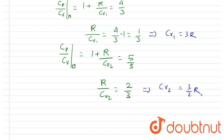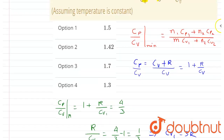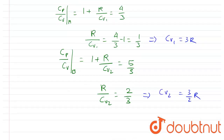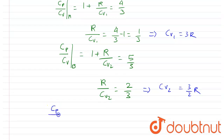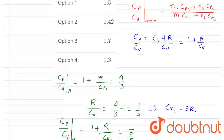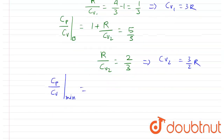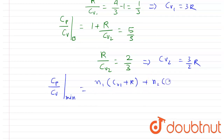Now we apply the mixture formula. With n1 = 3 moles of gas A and n2 = 2 moles of gas B, we substitute cp = cv + R for each gas: the numerator becomes n1·(cv1 + R) + n2·(cv2 + R) and the denominator is n1·cv1 + n2·cv2.